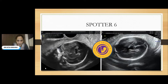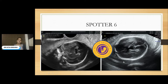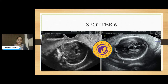The next spotter is a case of a 22-week-old fetus. This is the axial image and this is the coronal image. Because the fetus is in absolute oligohydramnios condition, I'm unable to provide many images, and this was done in transvaginal view only. What is your diagnosis here?